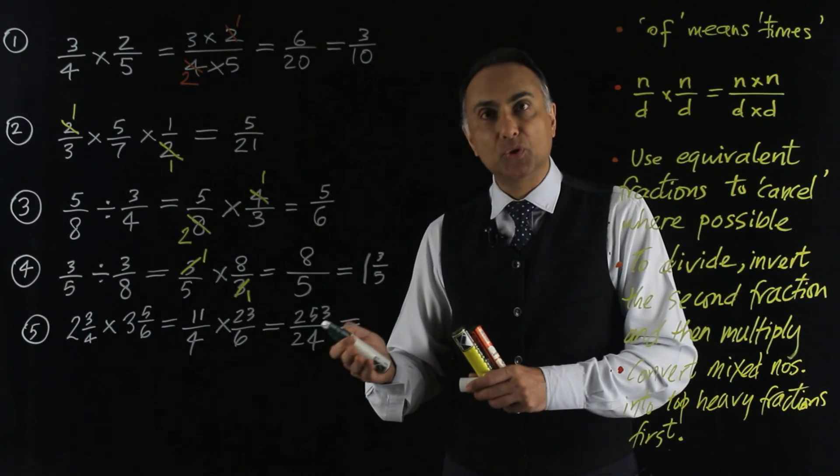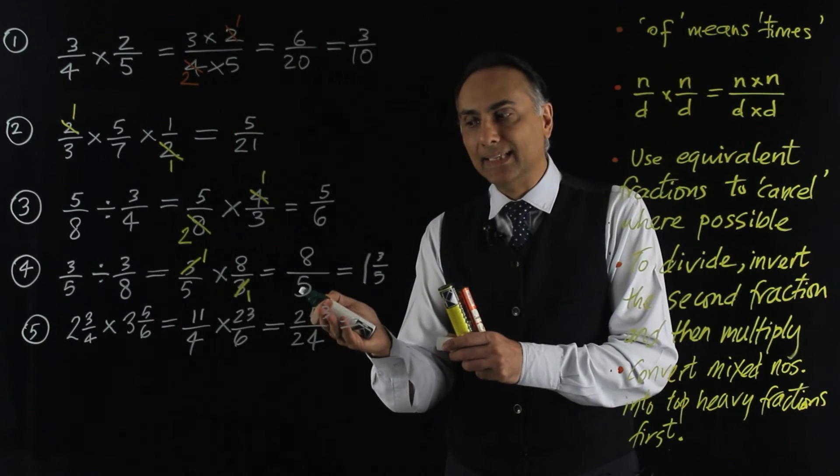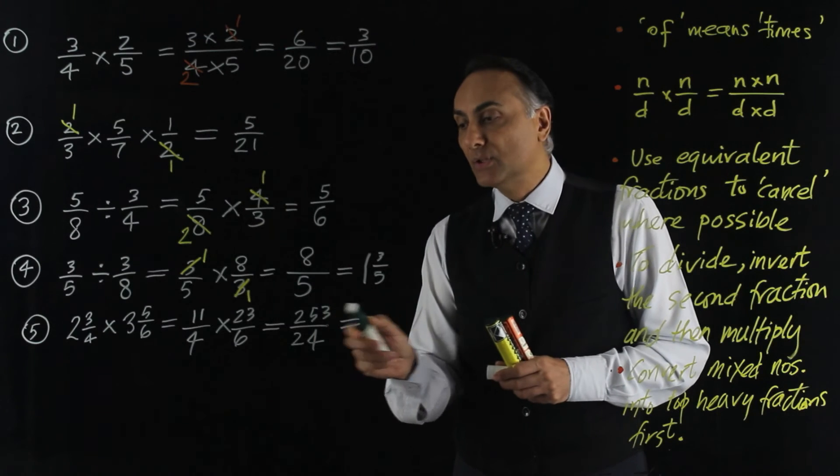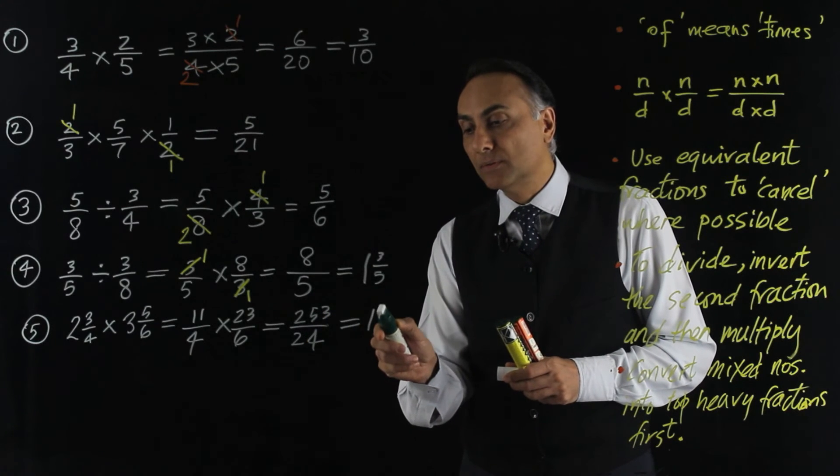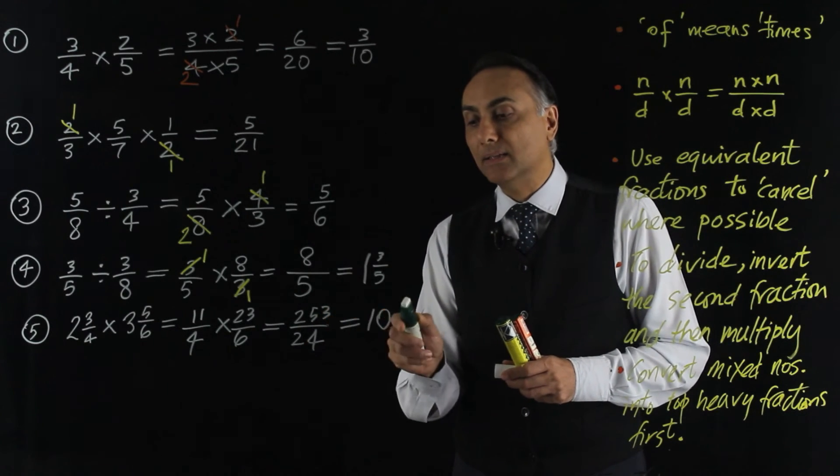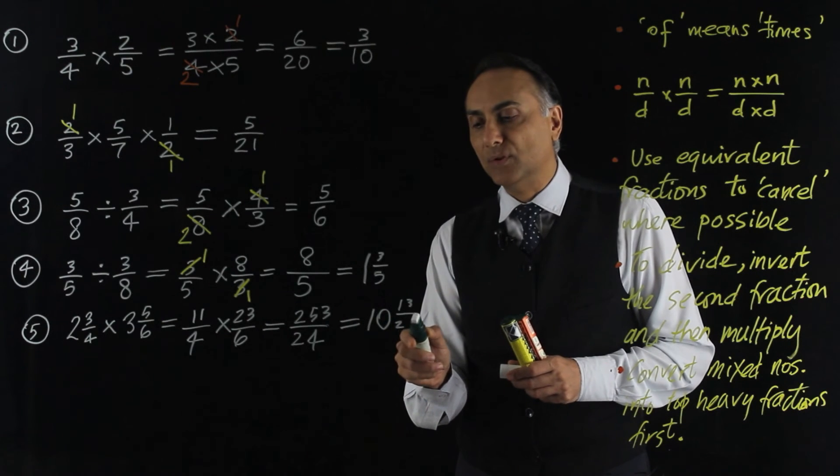obviously 10 24s get you up to 240. And then there's another 13 24s left over. So it's going to be 10 whole and then another 13 24s left over.